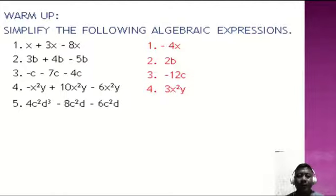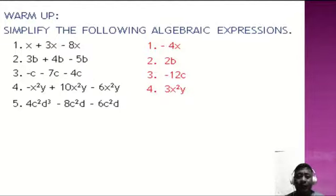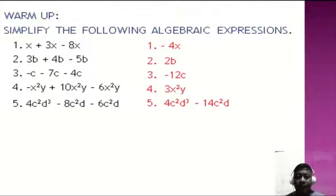Number five: 4c squared d cube minus 8c squared y minus 6c squared y. Take note: 4c squared d cube has no common term with the others. You can only combine negative 8c squared y and negative 6c squared y since they are similar terms. So we have 4c squared d cube minus 14c squared d.